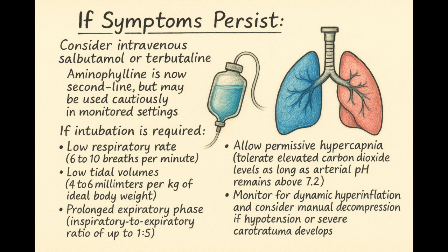Asthmatic patients requiring intubation need lung-protective ventilation strategies. Use volume-controlled or pressure-controlled modes. Tidal volumes should be low, around 4 to 6 milliliters per kilogram of ideal body weight. Respiratory rate should also be low, ideally 8 to 10 breaths per minute. The inspiratory-to-expiratory ratio should be adjusted to allow a prolonged expiratory phase up to 1:5. Apply minimal or zero PEEP to avoid auto-PEEP. Permissive hypercapnia is acceptable if arterial pH remains above 7.2. Monitor for dynamic hyperinflation — a sudden drop in blood pressure may indicate this complication; disconnect the circuit and perform manual decompression. Sedation and neuromuscular blockade may be needed to manage ventilator dyssynchrony.